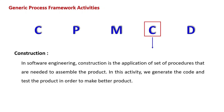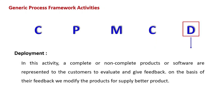The next activity is Deployment. In this activity, a complete or non-complete product or software is presented to the customers to evaluate and give feedback. On the basis of their feedback, we modify the product to supply a better product. This means delivering the software product that has been created for the user, client, or stakeholder. The user or client evaluates the software product and checks to see if all the requirements are met, and they give their own feedback accordingly.